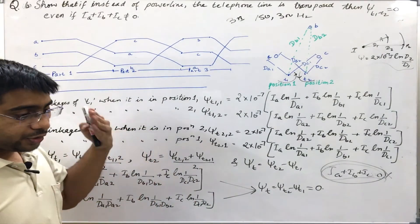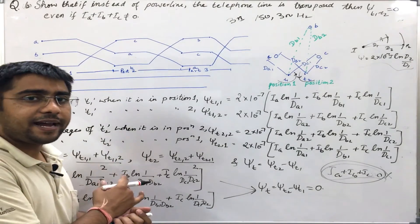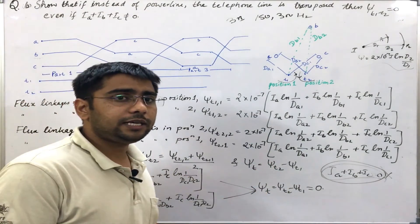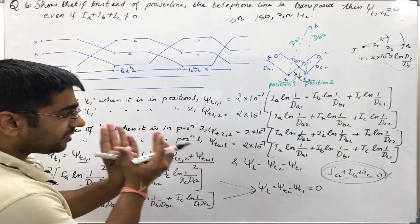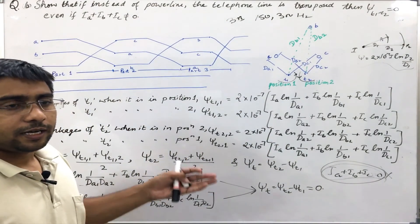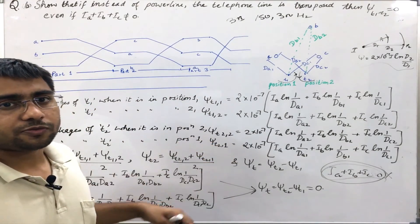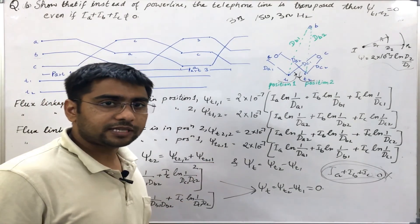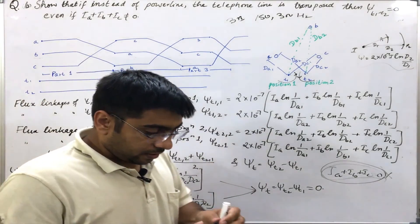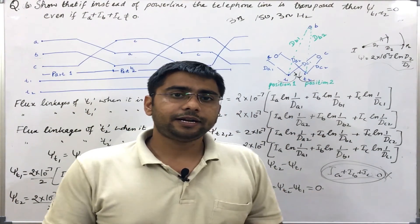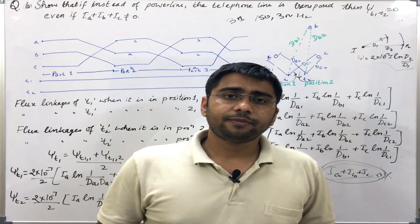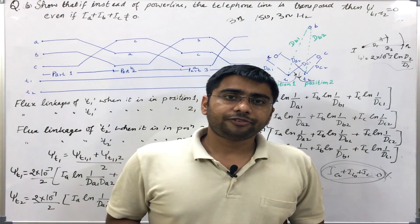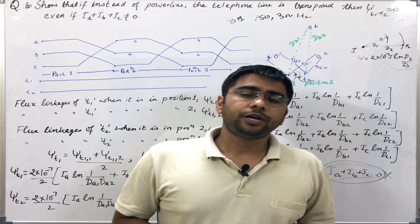These two examples show us the concept of transposition of power lines as well as telephone lines, and how to derive the flux linkages of a circuit due to current in other circuits. These concepts can be used in deriving inductance and flux linkages between various parts of a circuit. If you find this video helpful, please subscribe, share the channel, and press the bell icon to get notifications when new videos are uploaded. Thank you.